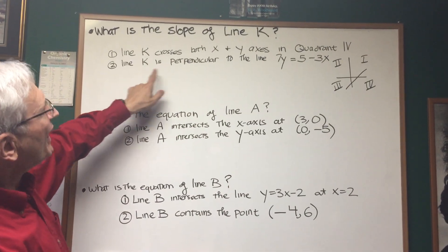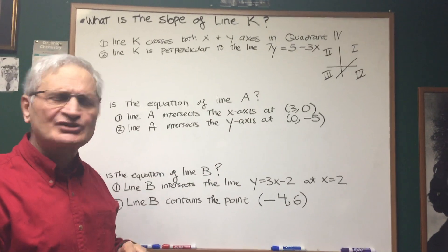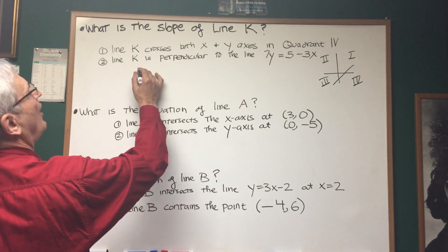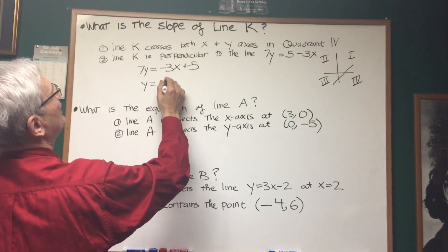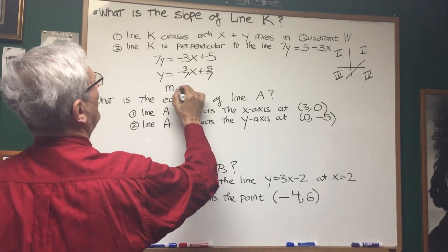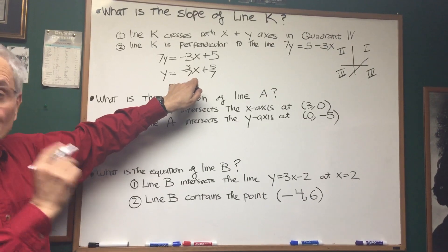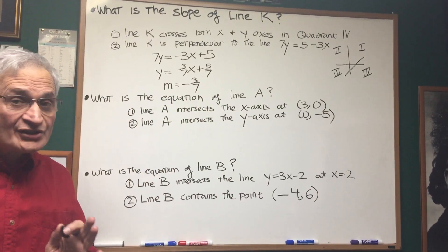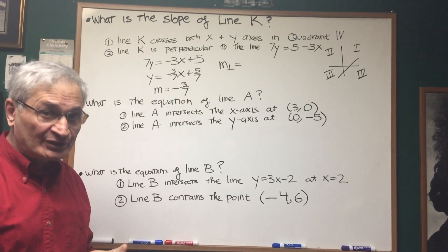Let's look at statement 2. Line K is perpendicular to the line 7y equals 5 minus 3x. Is that sufficient to answer the question? Well, I think it is because if we put that expression in y equals mx plus b form, let's put the negative 3x first. Let's divide both sides by 7, negative 3/7 x plus 5/7. We know from y equals mx plus b form that when we solve for y, the number times x is the slope of that given line. So the slope of this line is negative 3/7.